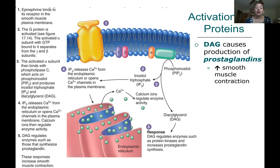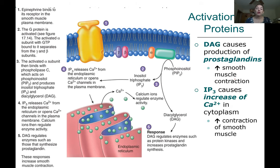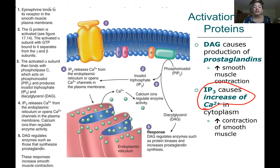So how does this whole process work? How do we trigger prostaglandins to be released and cause smooth muscle contraction? It ultimately leads to an increase of calcium ions in the cytoplasm. When calcium is released, it's able to trigger muscle contractions — we'll go into depth on that when we do muscle physiology. For now, let's go step by step.